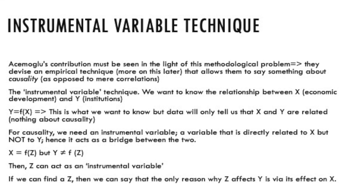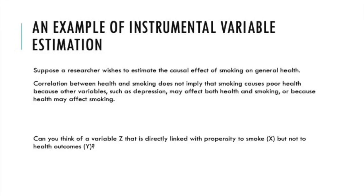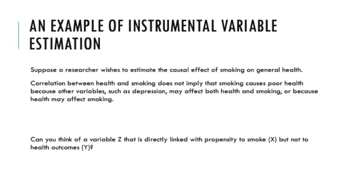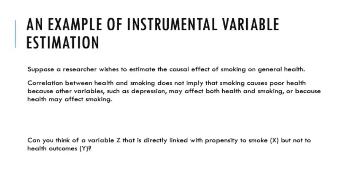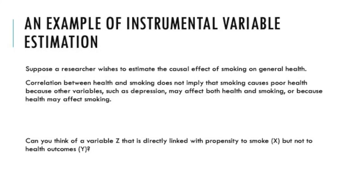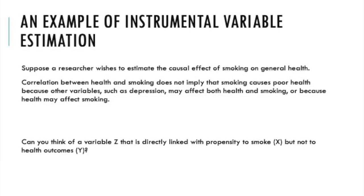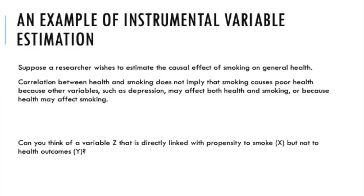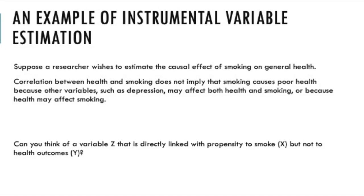Let's try understanding this via an example. Say you wanted to understand the link between smoking, our X variable, and ill health, an outcome variable Y. If we ran a simple regression, we find a statistically significant relationship. But which way does the causality run? Do smokers have bad health outcomes because they smoke, or do they smoke because they are depressed, unhealthy individuals to begin with? Now let's try solving this problem using the IV technique. We need to find a third variable Z that is directly connected to X, but not to Y.